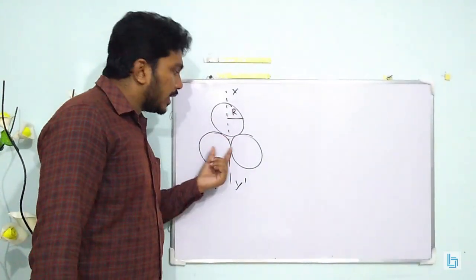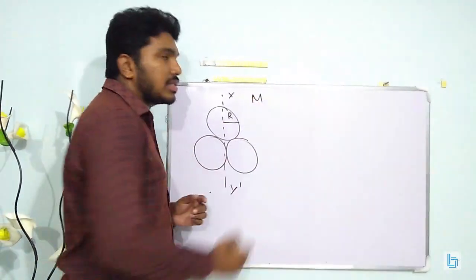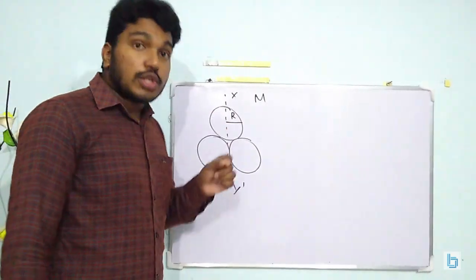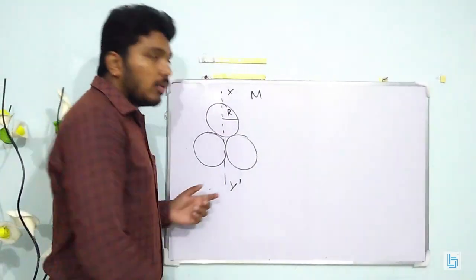We have three rings here, and each ring is having a radius r and a mass capital M. We are supposed to find out the moment of inertia about the axis y y'.